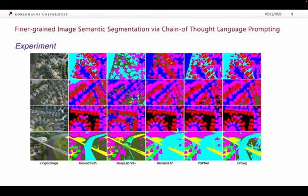For the experiments, we can see our CPSeg is better than other state-of-the-art methods. DeepLab and PSPNet use image-based approaches, while CLIP also uses standard prompts to get semantic segmentation.